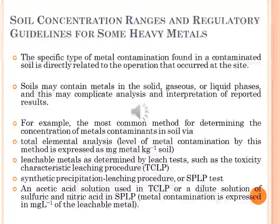The level of metal contamination may also be reported as leachable metal, as determined by leach tests such as the Toxicity Characteristic Leaching Procedure (TCLP) or the Synthetic Precipitation Leaching Procedure (SPLP). These procedures measure the concentration of metal in leachate from soil contacted with an acetic acid solution (for TCLP) or a dilute solution of sulfuric acid and nitric acid (for SPLP). Metal contamination is expressed in milligrams per litre of leachable metal.